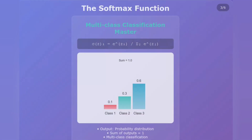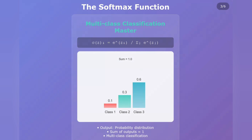Now let's level up with Softmax, the multi-class classification champion. The formula looks more complex — e to the power of z_i divided by the sum of e to the power of z_j for all j — but don't let that intimidate you. Here's what's brilliant about Softmax: look at these three bars representing different classes. They add up to exactly 1.00, because Softmax converts any set of numbers into a proper probability distribution. In this example, class 1 has 10% probability, class 2 has 30%, and class 3 has 60%. This makes perfect sense for problems like image classification — classifying whether an image contains a cat, dog, or bird. The highest probability wins.